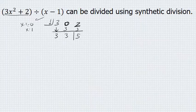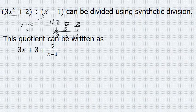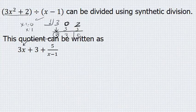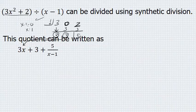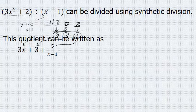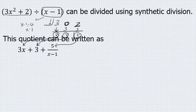This quotient can be represented as 3x, the first number comes from the first number in the bottom row, plus 3, the second 3 is represented right there, and the last number is the remainder, which is written over what you are dividing by originally. So this quotient is 3x plus 3 plus 5 over x minus 1.